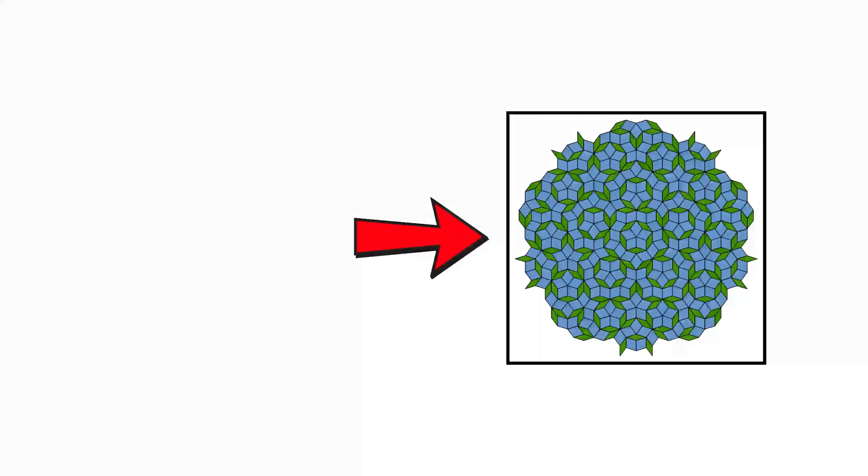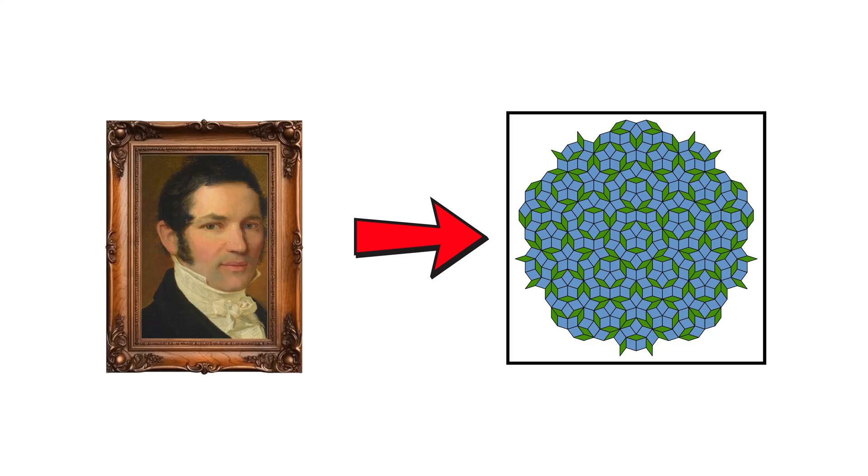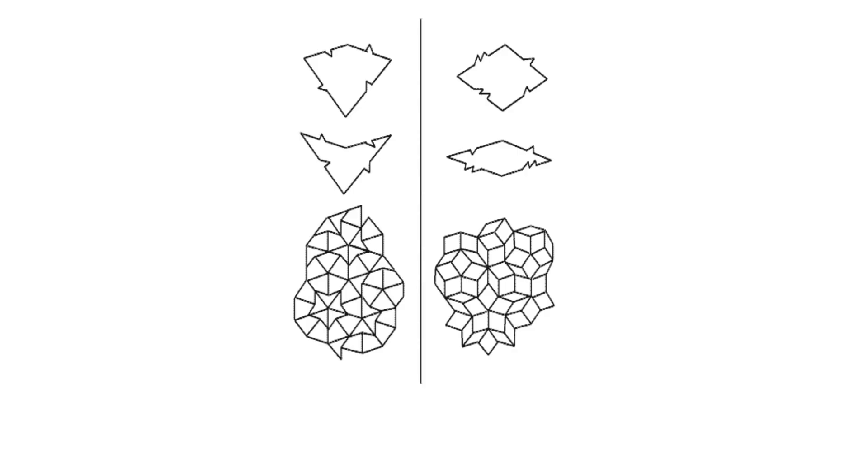This type of tessellation, initially inspired by the studies of the German architect, civil engineer, and urban planner George Ludwig Friedrich Laves, and later more thoroughly developed by the British physicist and mathematician Sir Roger Penrose, is described mathematically using local matching rules that prevent total repetition.